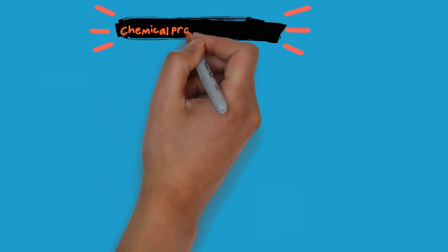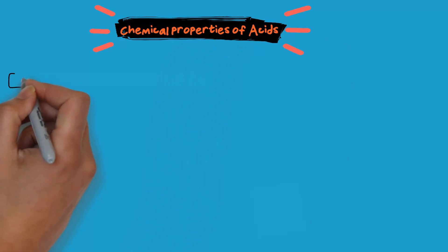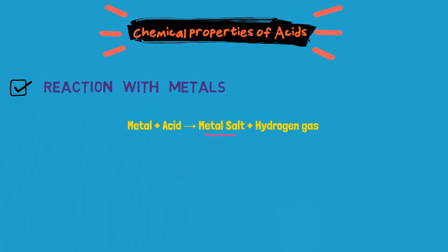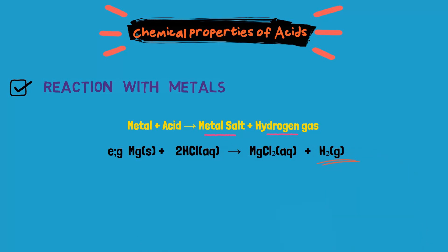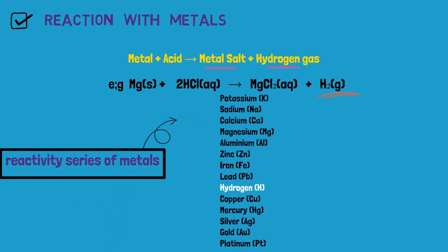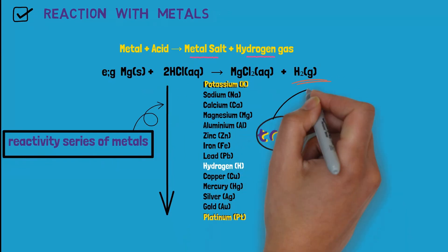Dear students, let us now understand the chemical properties of acids. Acids react with metals to form metal salts and release hydrogen gas. For example, when magnesium reacts with HCl, it forms magnesium chloride and hydrogen gas.